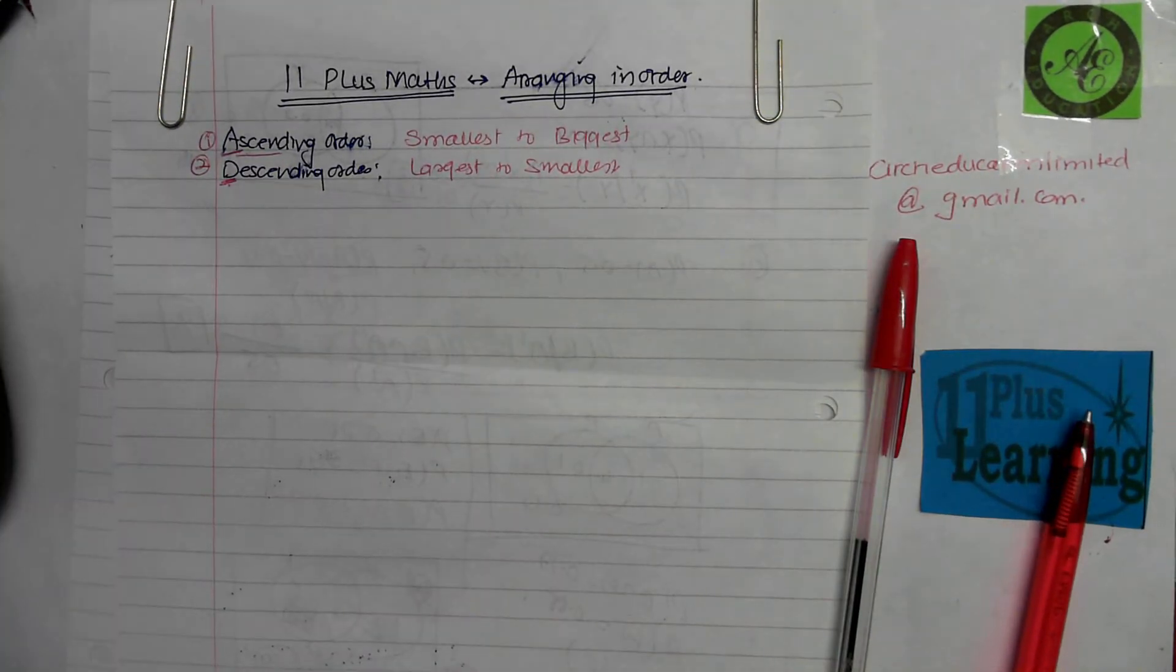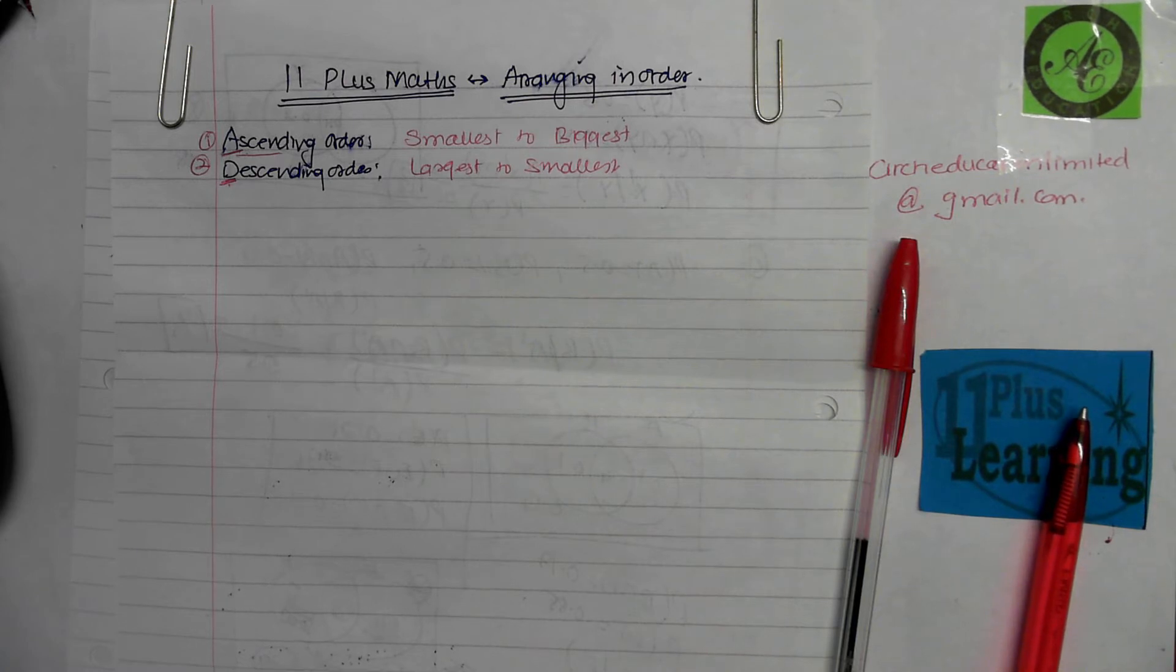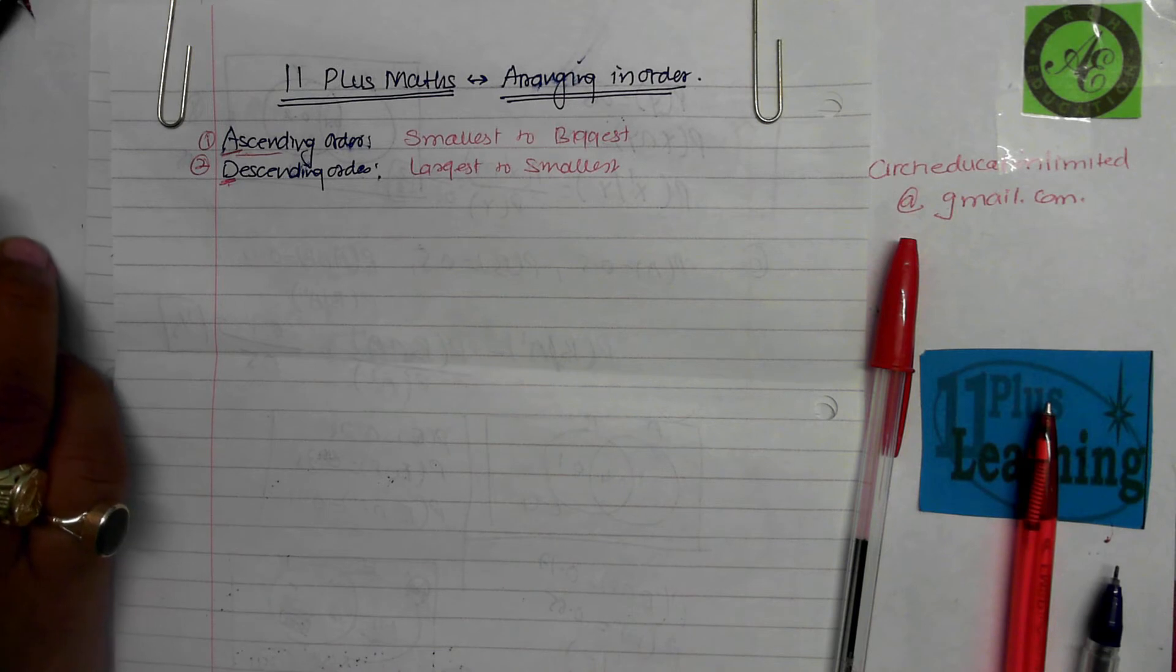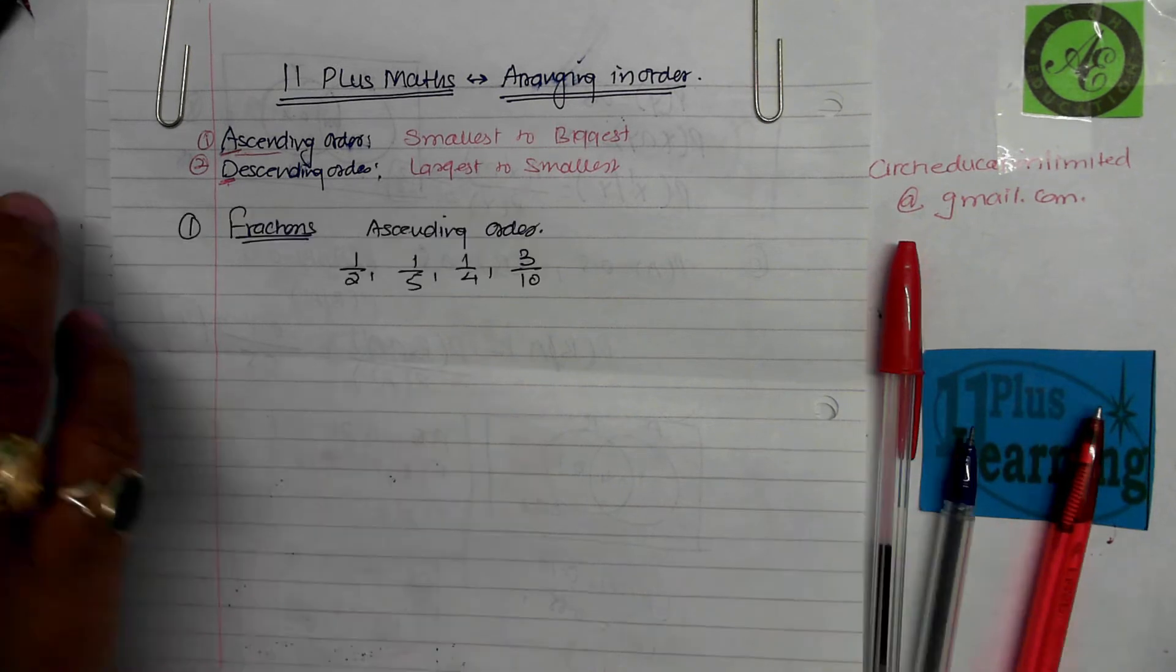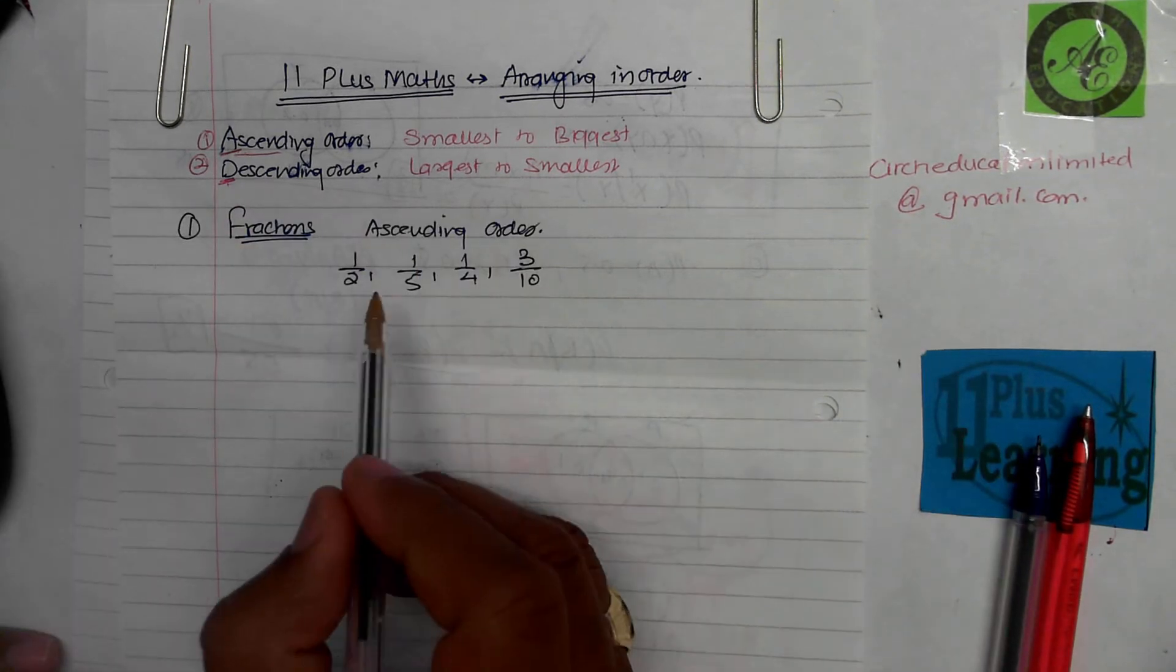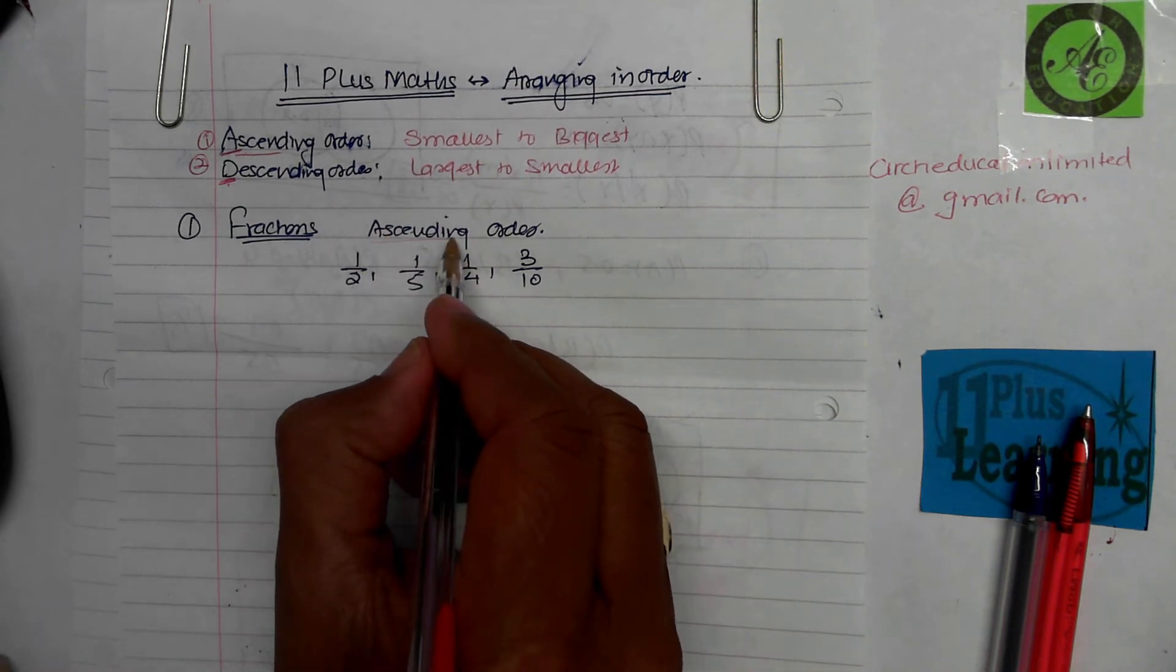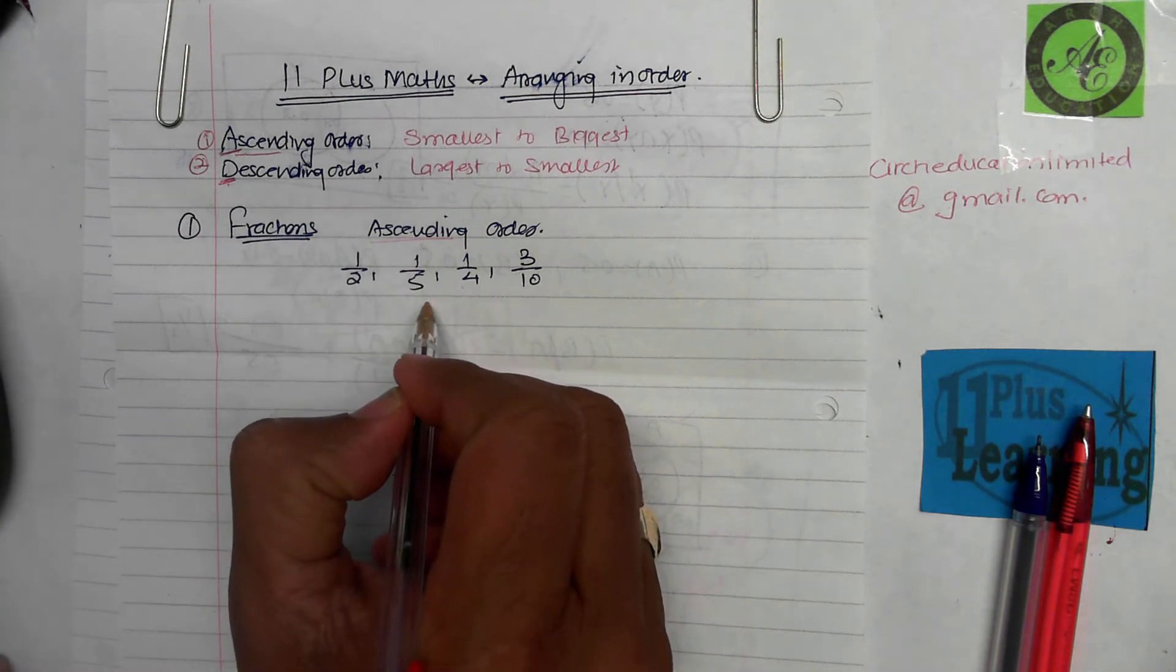Once you know this, then you're ready to do the questions which give you certain sets of numbers and ask you to put them in ascending or descending order. Please start with question number one. The first question, we got four fractions and we have to put them in ascending order. That means I'm looking for the smallest number first and then going up to the largest.